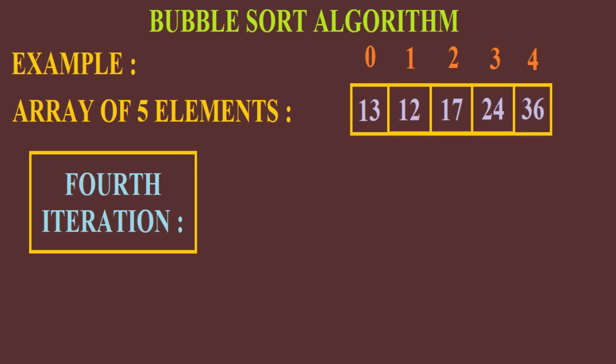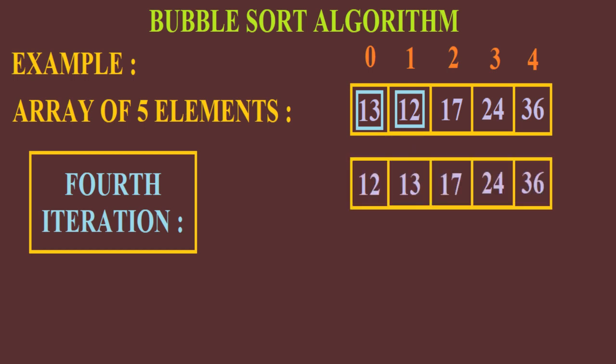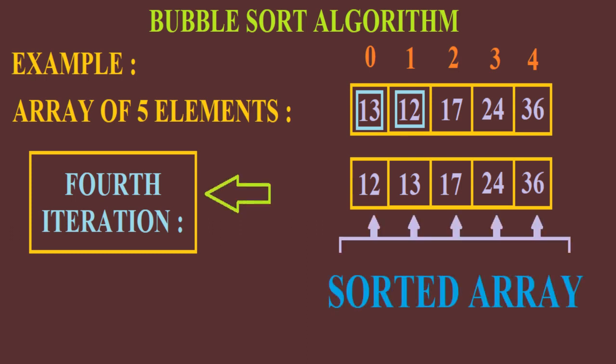In the fourth iteration, 13 will be compared with 12 and since it's greater than 12, both the elements will swap positions. In this way, after each iteration, the greatest element in the array gets bubbled up to its desired position. Therefore, this algorithm is known as the bubble sort algorithm. Thus after the fourth iteration, we have got our sorted array which is 12, 13, 17, 24 and 36. This is how the bubble sort algorithm works.